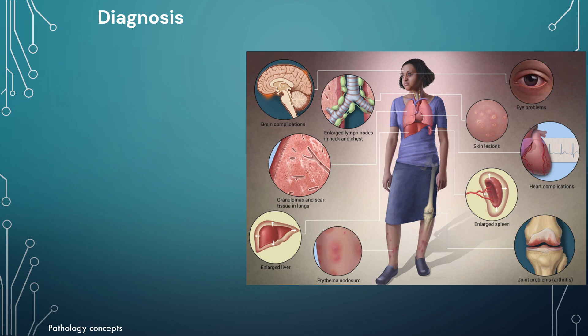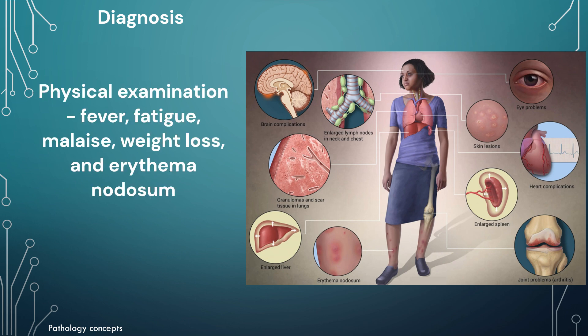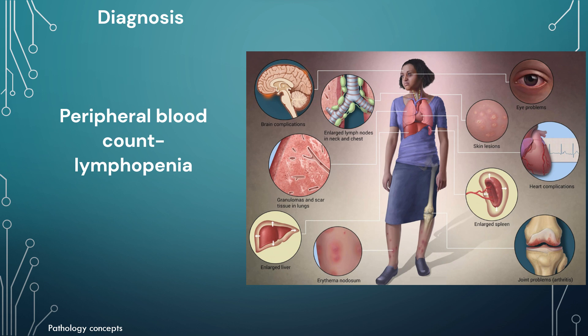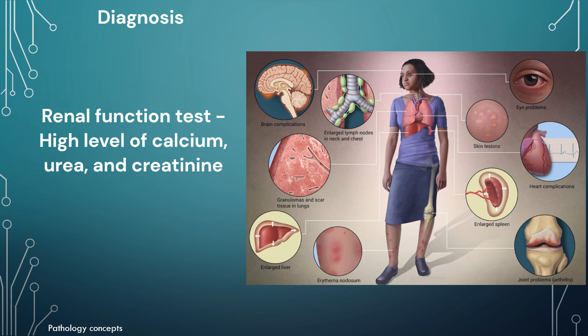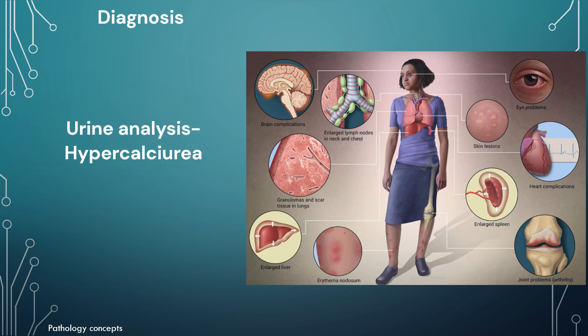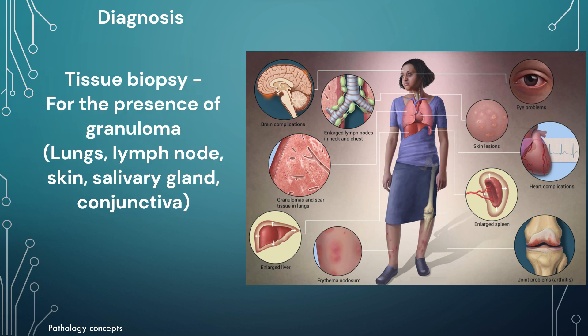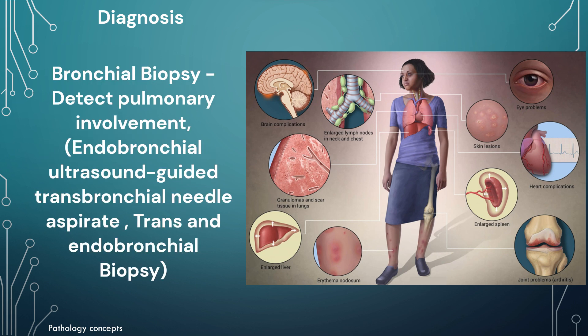On physical examination, one can find fever, fatigue, malaise, weight loss, and erythema nodosum. Routine ophthalmologic examination may reveal orbital and eyelid granulomas. Peripheral blood count can show lymphopenia. Renal function tests show high levels of calcium, urea, and creatinine. Urine analysis shows hypercalciuria. Pulmonary function tests assess pulmonary involvement and disease severity. Tissue biopsy is used to detect granulomas, which can be found in lung, lymph nodes, skin, salivary gland, and conjunctiva. Bronchial biopsy is used to detect pulmonary involvement, and can be endobronchial ultrasound-guided, transbronchial needle aspirate, or transbronchial/endobronchial biopsy.